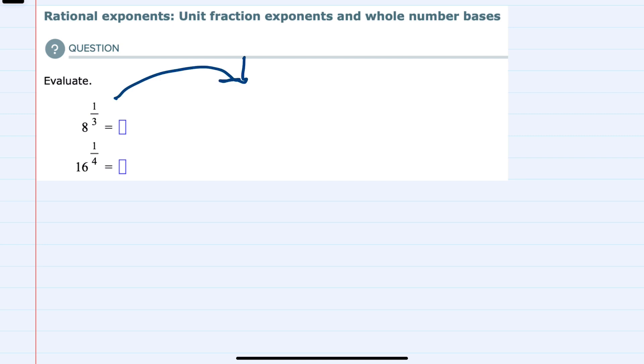So for the one on the top, I can convert this to a radical expression by keeping the base, here the 8. The denominator becomes the root, so this is going to be a third root, and then the numerator is still the exponent when it's written underneath the radical.